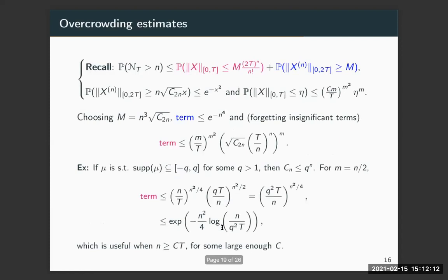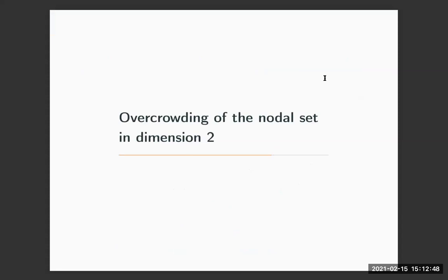Now that we have both the small ball estimates and tail bounds for the higher derivatives of X, we put these estimates together and make an optimal choice of M to minimize their sum. This completes part two of the talk. We now come to the final part: how to get overcrowding estimates for nodal volume in higher dimensions using the overcrowding estimates from the previous part. I'll restrict to dimension two, which is representative of higher dimensions.